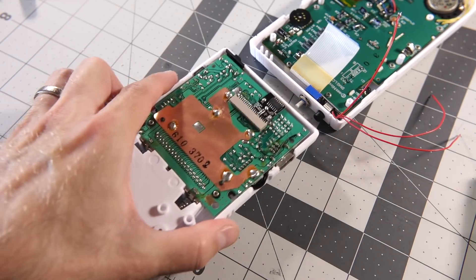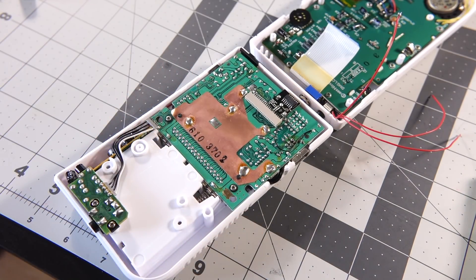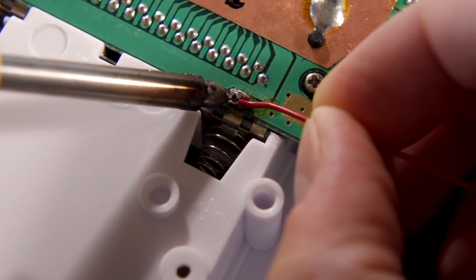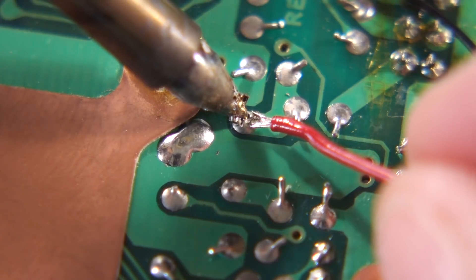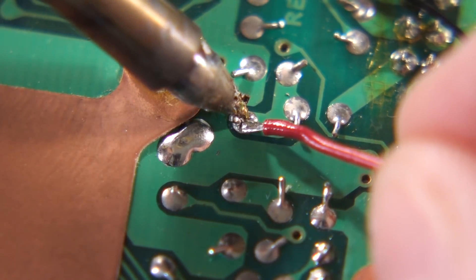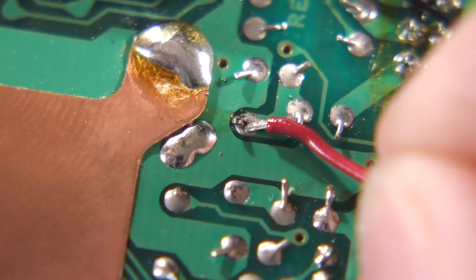Then I grabbed the back half of the Game Boy to finish up the soldering. The ground wire on the module gets soldered to the negative battery terminal here, while the clock wire, labeled OUT on the module, goes to this point next to the copper shield.